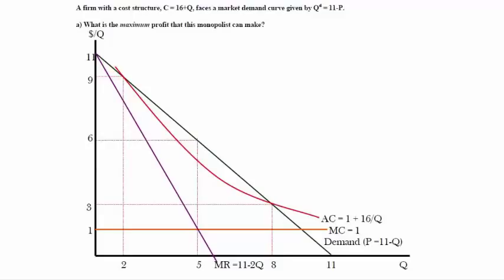This lecture discusses the monopoly problem, and we start with a very simple problem. Demand is given by Q equals 11 minus P. The cost structure is C equals 16 plus Q. What is the maximum profit that this monopolist can make?